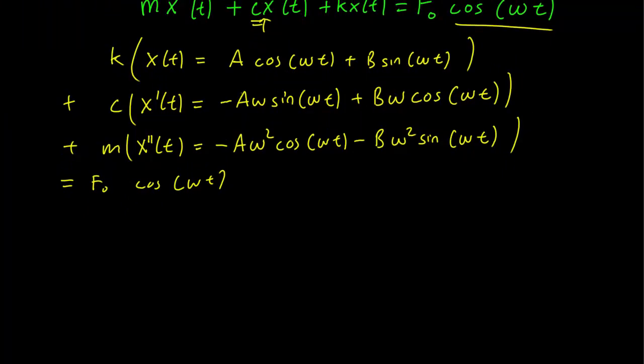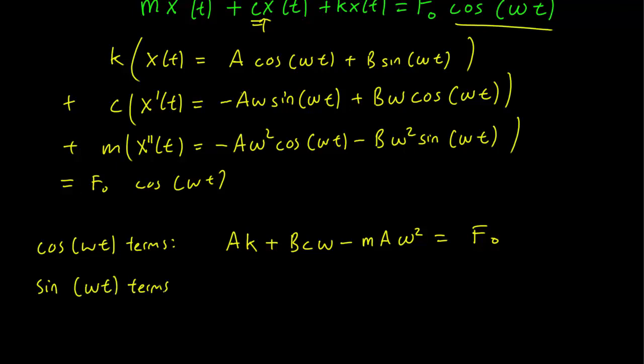So let's collect terms. So looking at the cosine terms, what do we have? We have a times k plus b c omega minus m a omega squared equals f naught. We have b k minus a c omega minus m b omega squared equals 0.